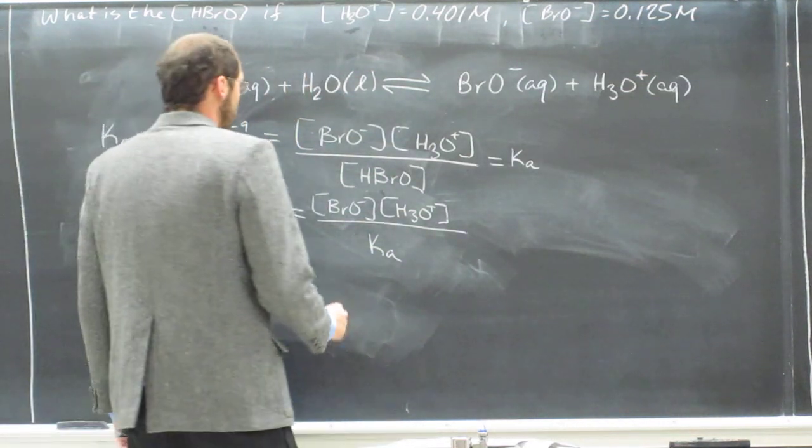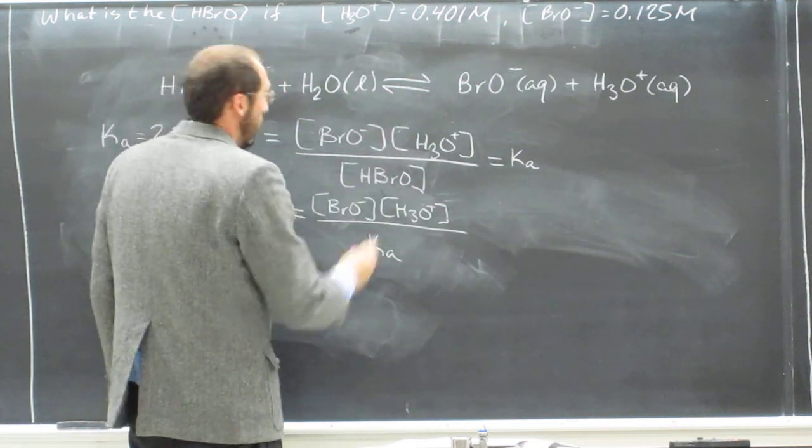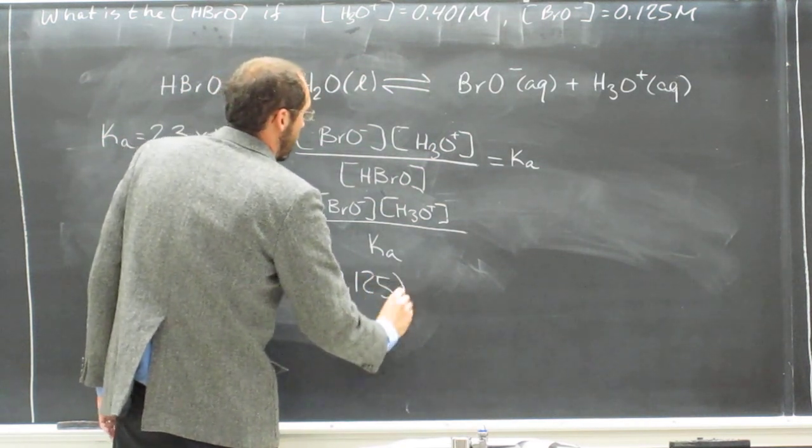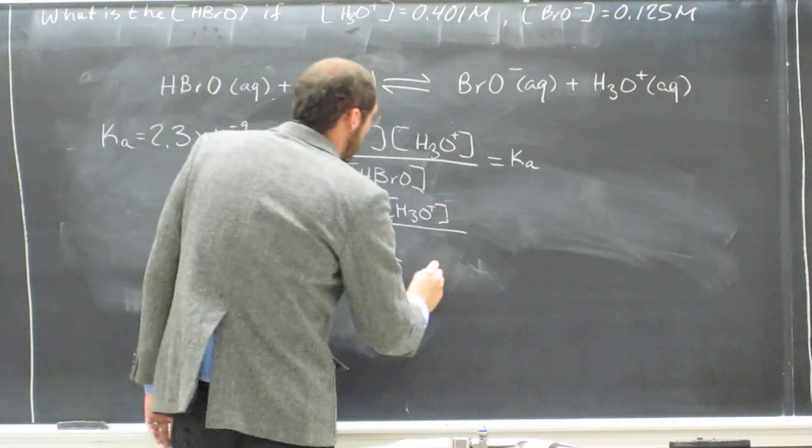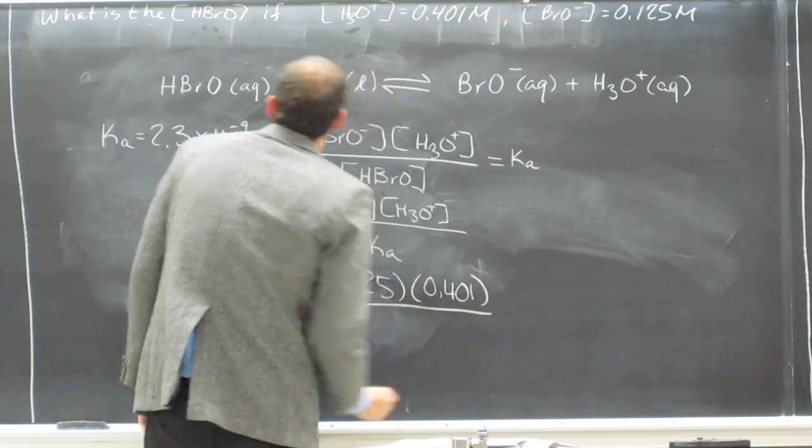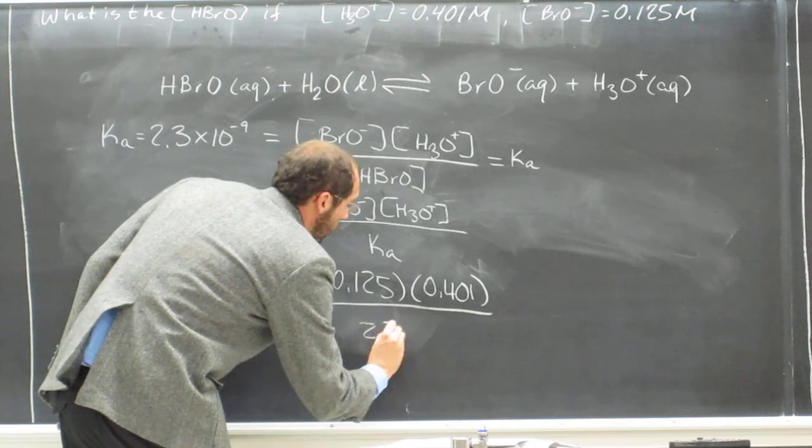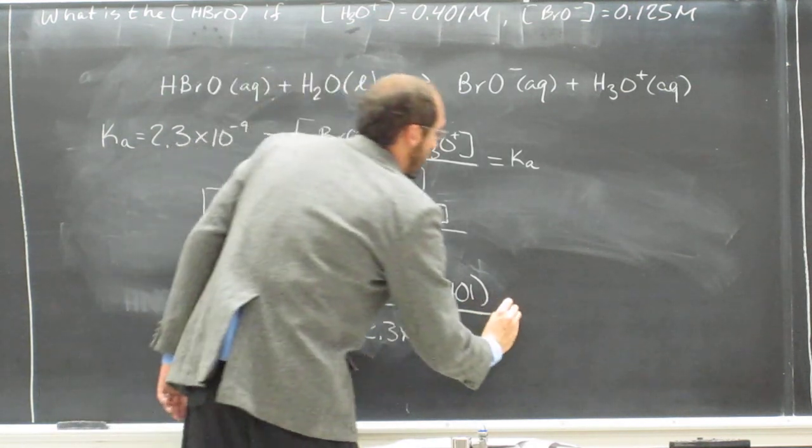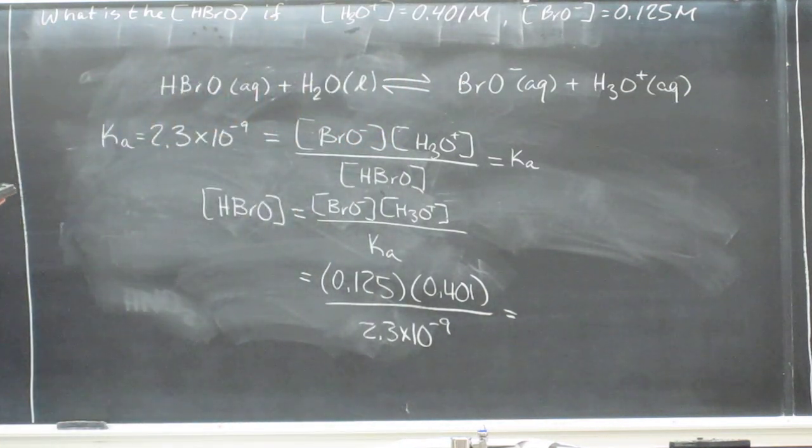So now all we need to do is plug those numbers in. BrO minus is 0.125, H3O plus is 0.401, and the Ka is 2.3 times 10 to the negative 9. So that should give us the concentration.